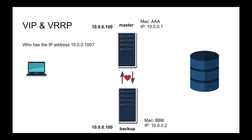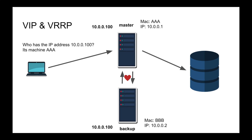When the client broadcasts 'who has IP address 10.0.0.100,' both machines receive that question. The backup node knows it is not the master for this VIP and drops the question. The master node responds with MAC address AAA. The client then puts destination MAC address AAA and destination IP 10.0.0.100 and sends the request. The load balancer then funnels the request to the back-end application — could be Node.js, nginx, HAProxy, Caddy — anything. That trick is played at the low-level ARP protocol.